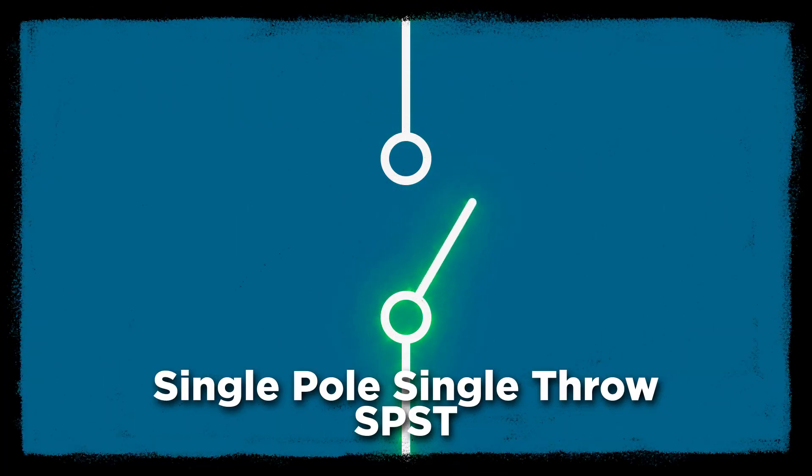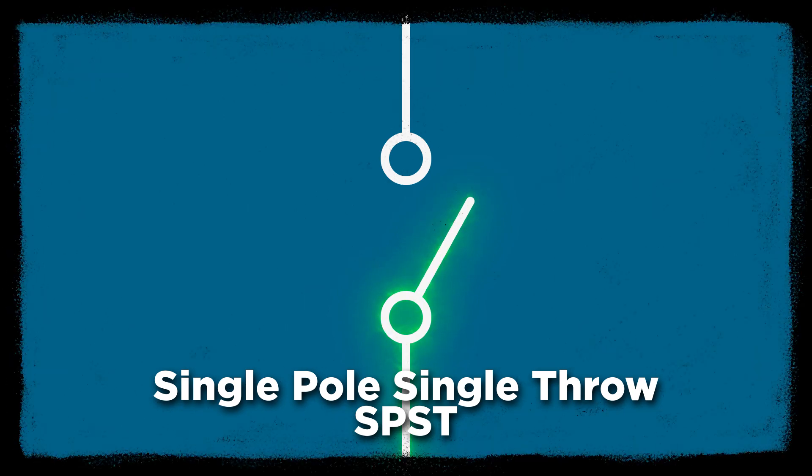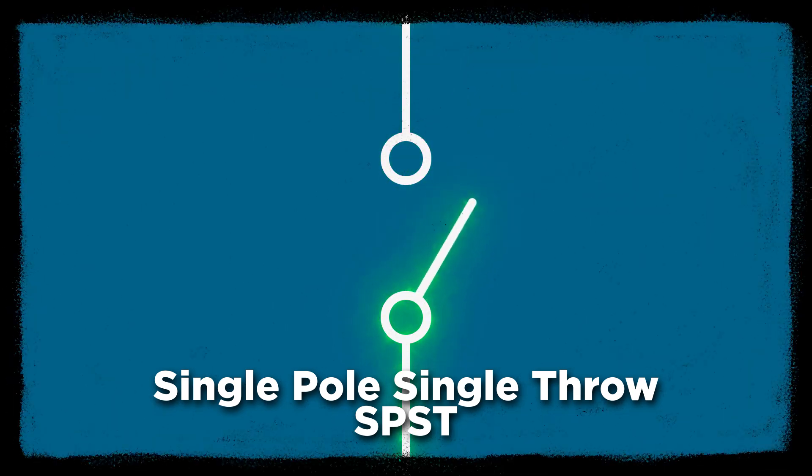Relays can also do more than just connect or disconnect a single path of electricity. They come with different combinations of poles and throws, which enable you to do interesting things when the input circuit is or is not activated. The number of poles a relay has defines how many switches there are in its control circuit. A single pole relay will let you switch only one device on or off.